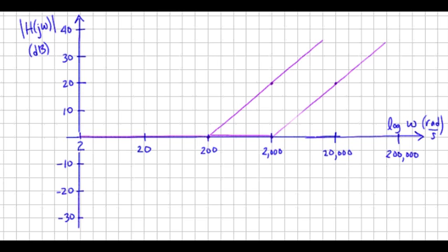Poles start at 0 dB and go down. So we've got a pole with a break at 20 radians per second. So that's right here.